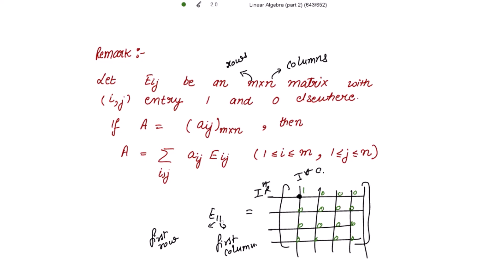Now suppose it is E12. The entry element of E12 means first row and second column. So this is your first row and second column — this entry becomes 1 and rest of them all become 0. Such a matrix is your Eij.